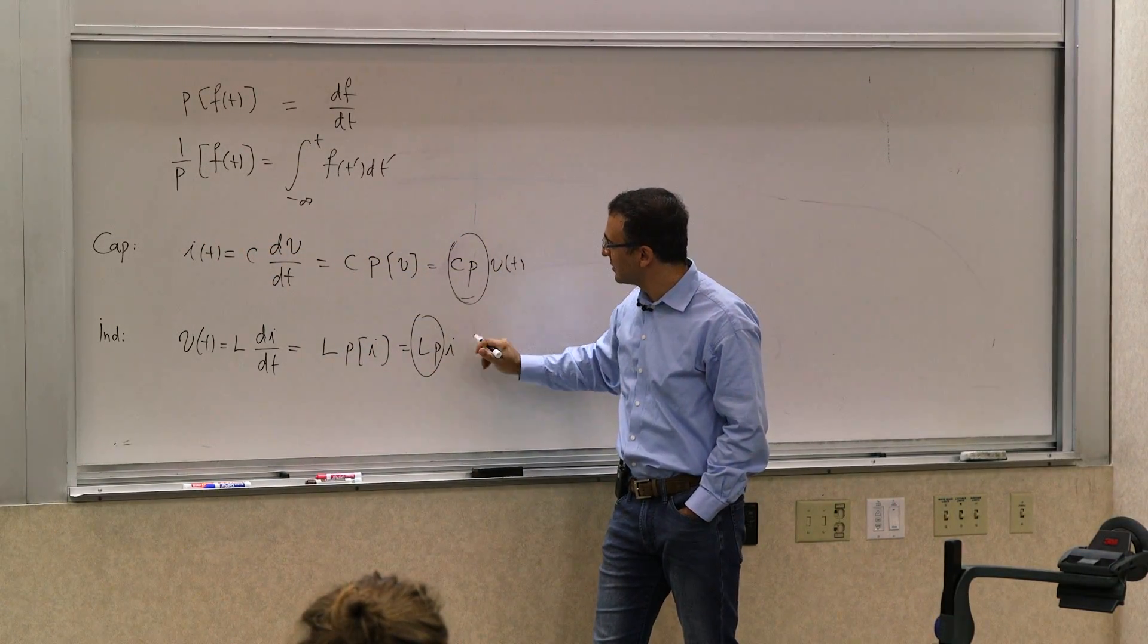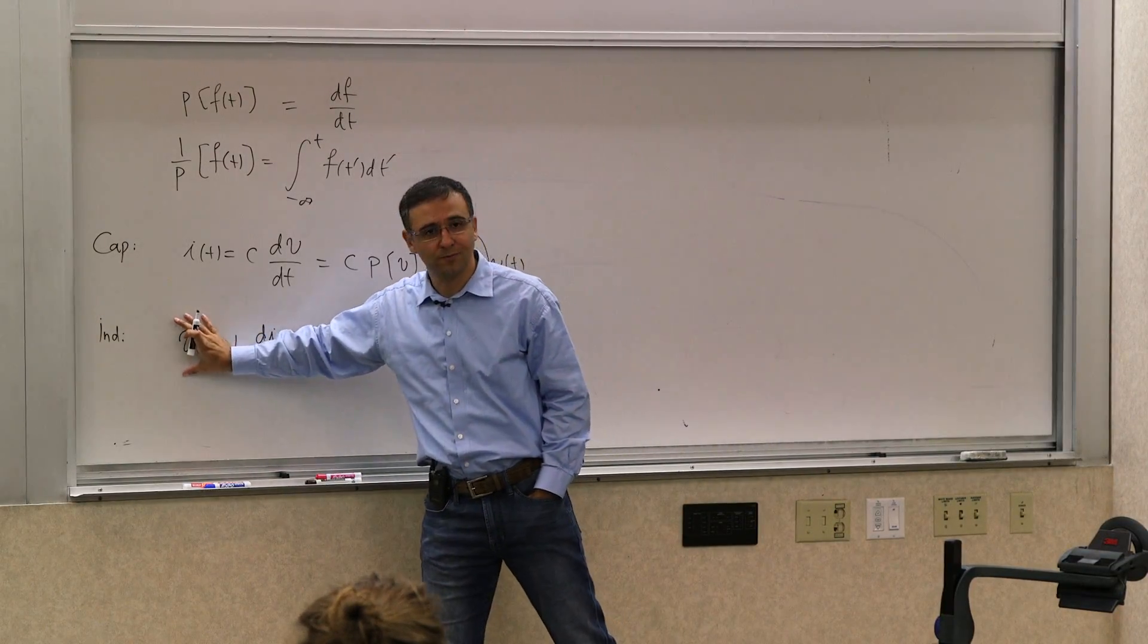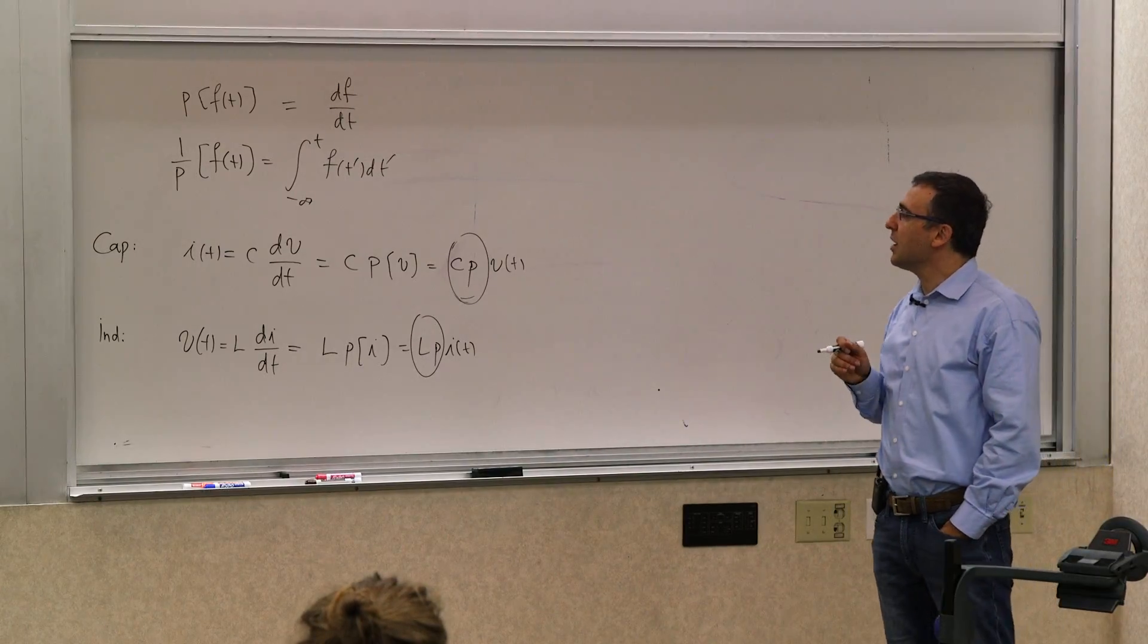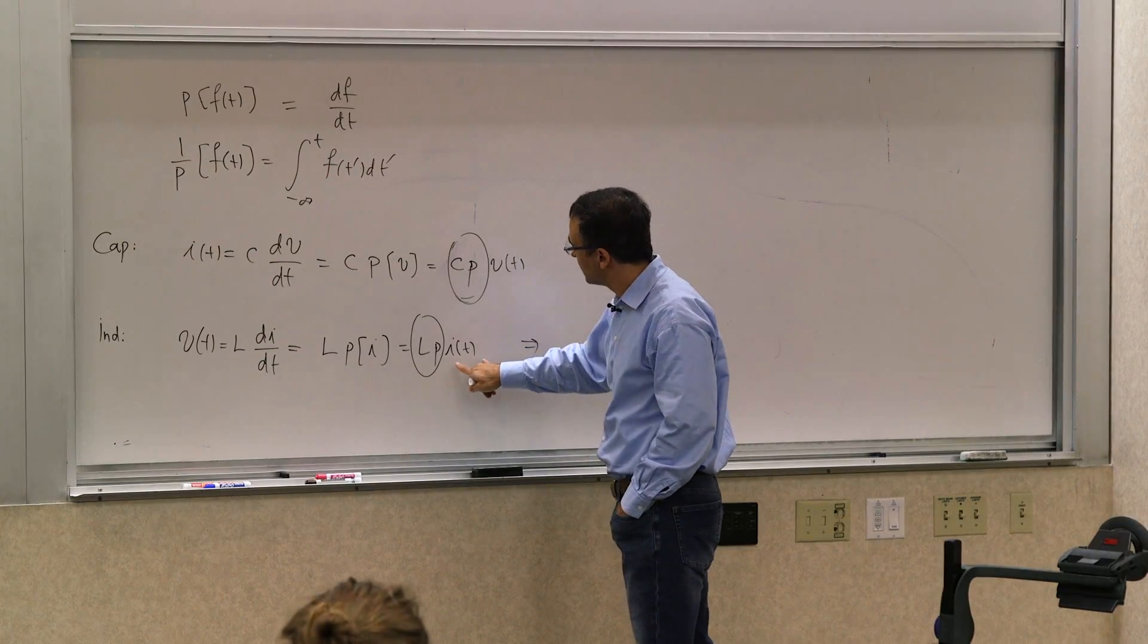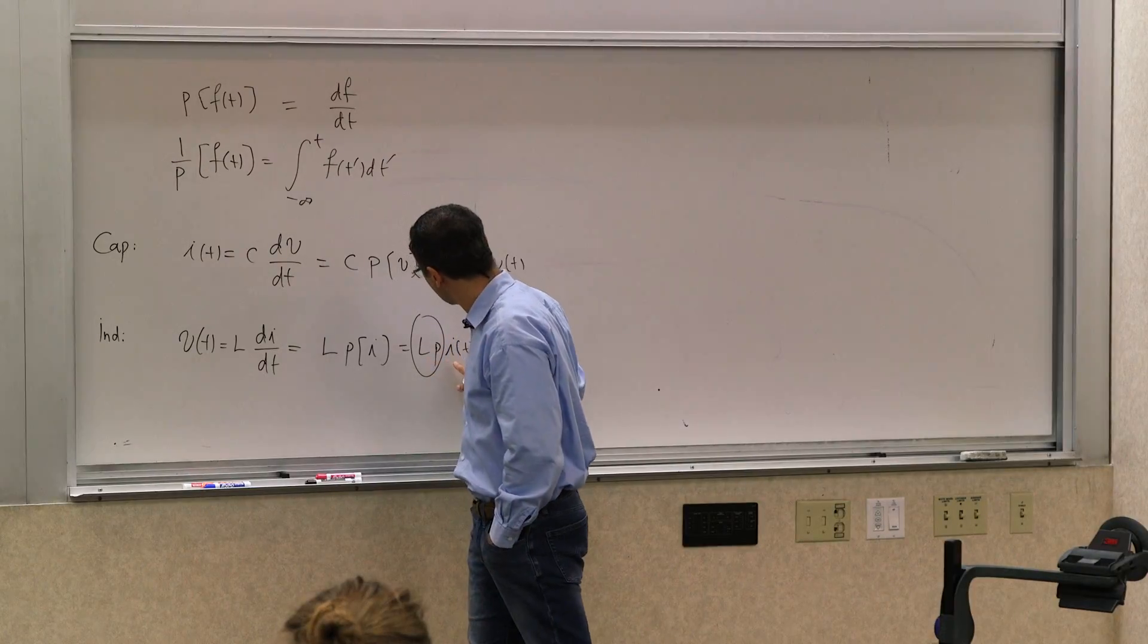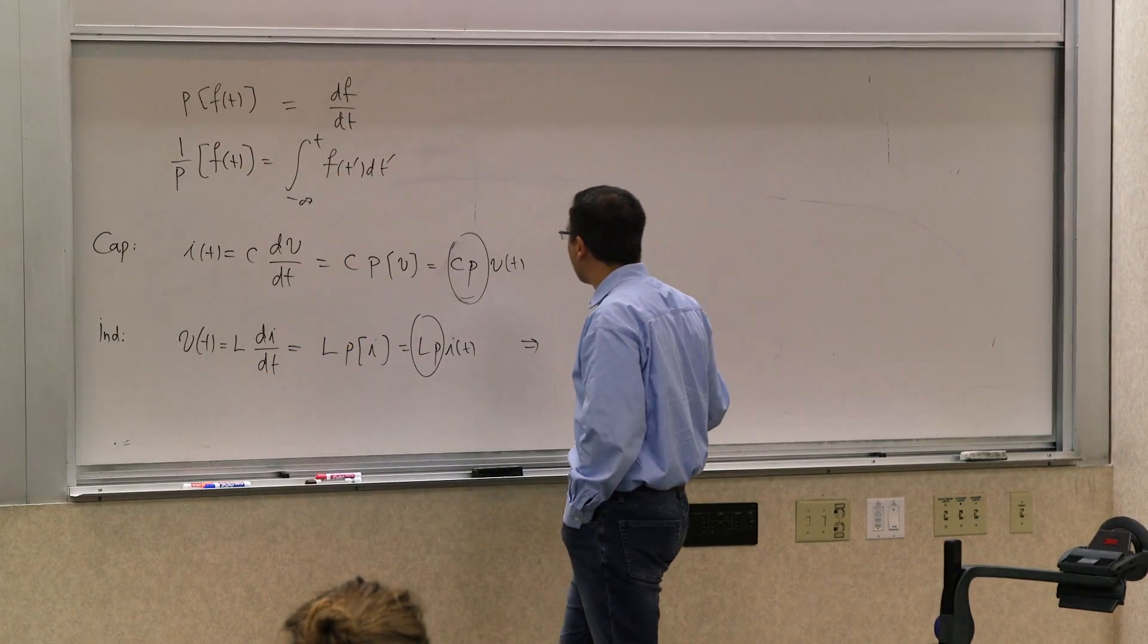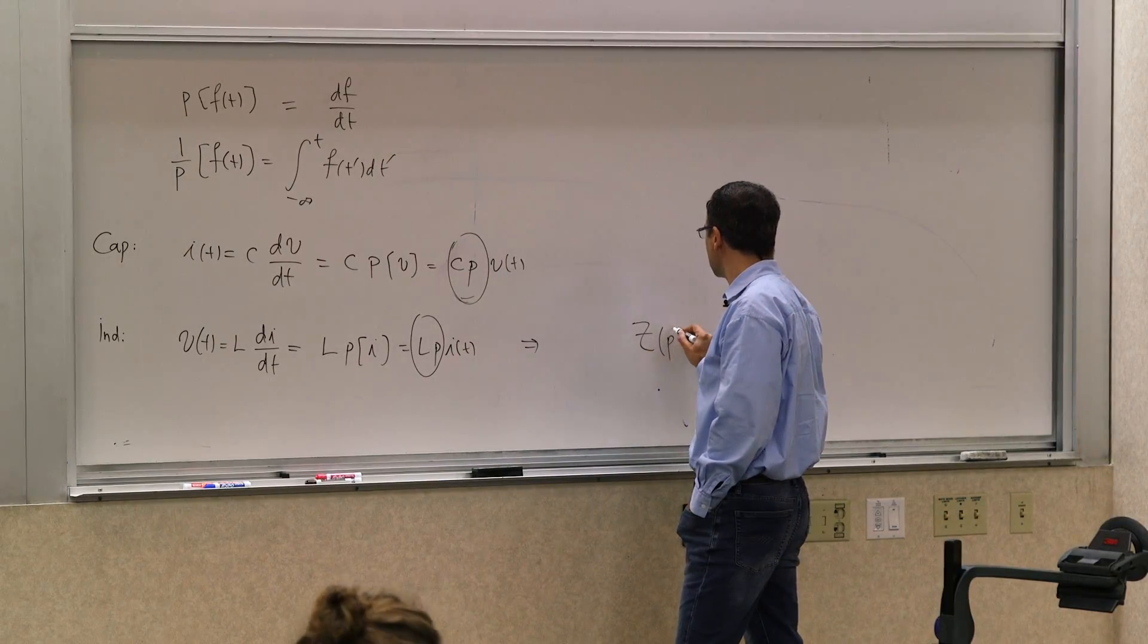And this is an operator that takes a current function, a function of time, and produces a voltage. So these are, for example, we call these kind of operators in general, an operator that relates the voltage, it takes a current of a branch and produces its voltage.